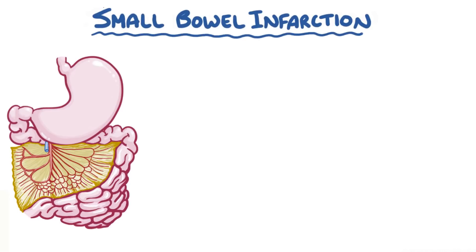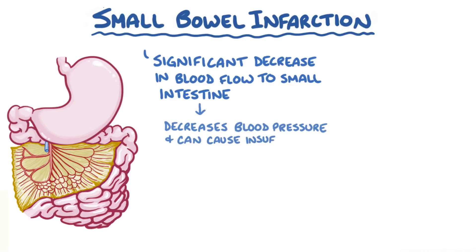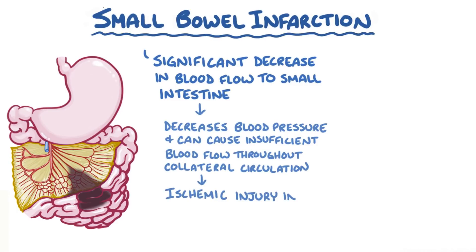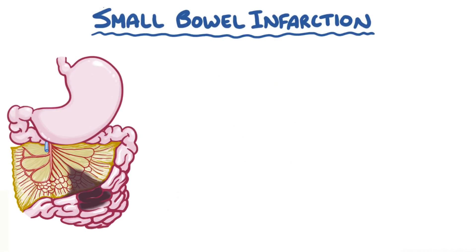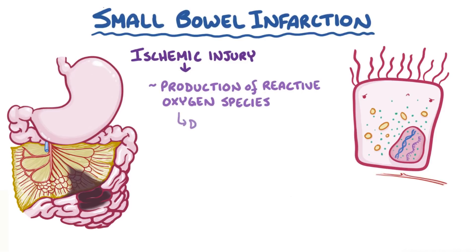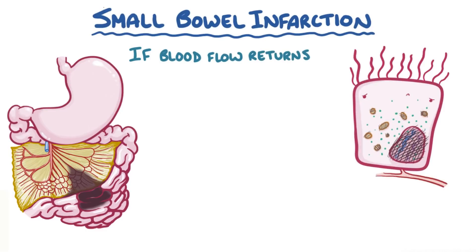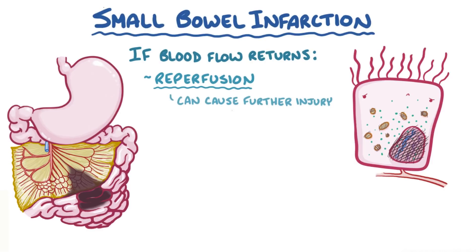Small bowel infarction happens when there's a significant decrease in blood flow to the small intestine. This reduction in blood flow decreases blood pressure and can cause insufficient blood flow throughout the collateral circulation, which initiates ischemic injury in a wide region of tissue. At the cellular level, ischemic injury can lead to the production of reactive oxygen species which can damage DNA, RNA, and proteins in the cell, leading to cell death. If blood flow returns to the ischemic tissue, it's called reperfusion. Unfortunately, that process can cause further injury, called reperfusion injury.